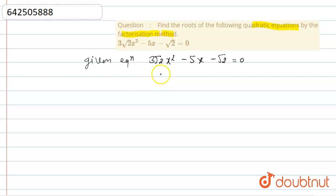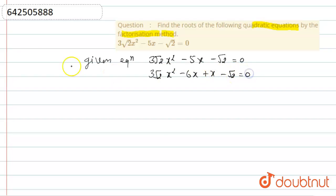So now if we split the middle term, we will find minus 6x plus x minus √2 equal to 0. If we take common 3√2, then 3√2·x, then x minus √2 will be left.